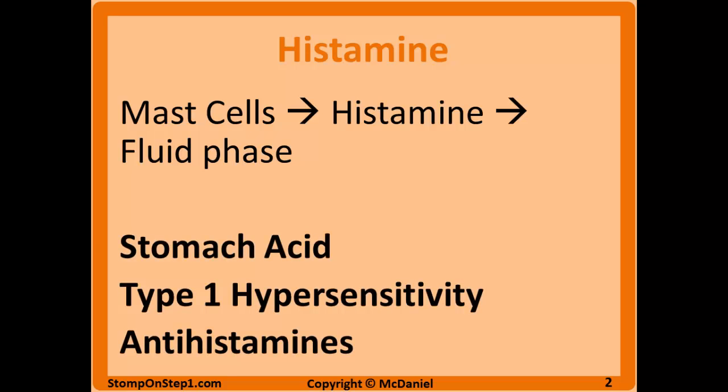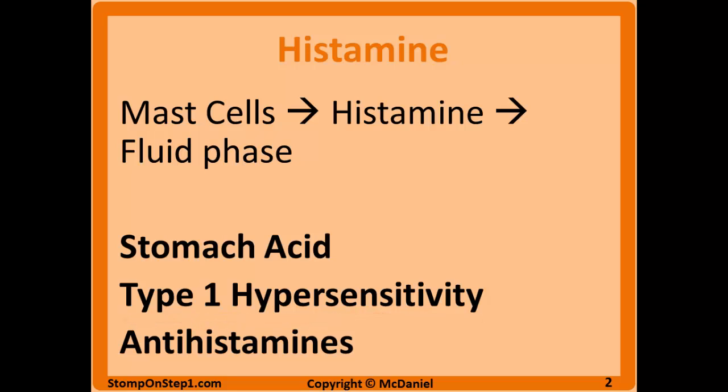Histamine has some high yield correlations to cover briefly here. Histamine is a mediator of type 1 hypersensitivity reactions, allergies, and anaphylaxis. Histamine also signals parietal cells to increase stomach acid. Antihistamines antagonize histamine's action — those targeting H1 histamine receptors are used to treat allergy symptoms, while those antagonizing H2 histamine receptors are used to treat GERD and peptic ulcer disease, since they primarily target the stomach acid pathway.